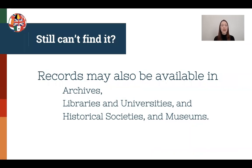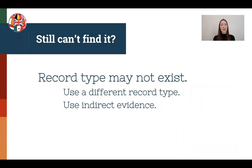If I still cannot find what I'm looking for, remember that archives, libraries, universities, historical societies, and museums all hold records — not everything's on the internet. We could also admit that that type of record may not exist. If I'm looking for a birth record and it was never created at that time period, I'll have to use a different record type, or use indirect evidence from documents of siblings or parents to figure out an estimated year of birth.